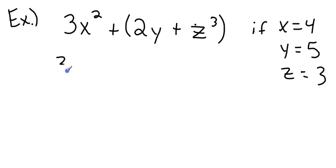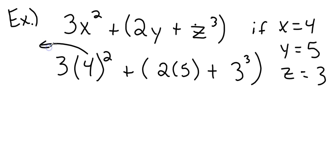So let's take a look at this. That's going to be 3 times 4 squared plus 2 times 5 plus 3 to the 3rd power. Now, I've substituted, I go ahead and take care of all my exponents. 4 to the 2nd power is 4 times 4, which is going to give me 16. So I have 3 times 16.